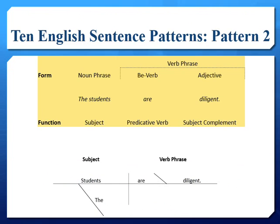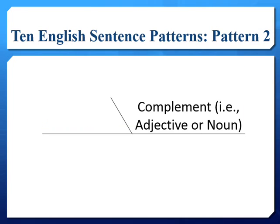In a sentence that follows pattern two, this sentence has a be verb just as in pattern one. But this be verb connects the relation between a subject complement and the subject. The subject complement does as it implies — it complements, or in other words, describes the subject. This particular subject complement takes the form of an adjective. Any complement following a be verb or noun is written on a flat line after a slanted line, as shown.